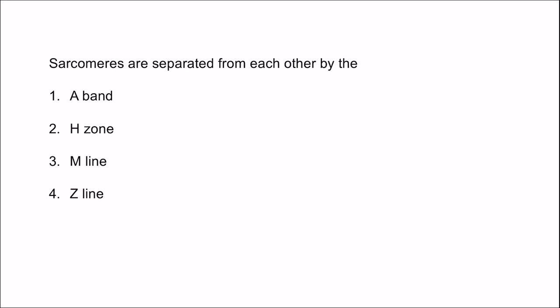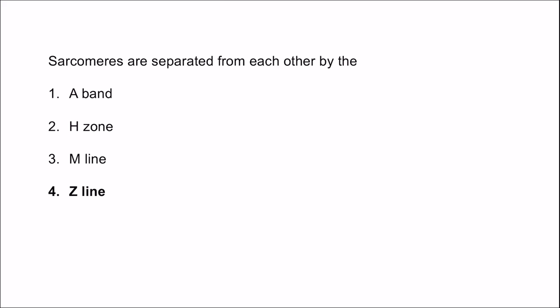Next MCQ: sarcomeres are separated from each other by — the answer is simply the Z line. Sarcomeres extend from one Z line to the other Z line.